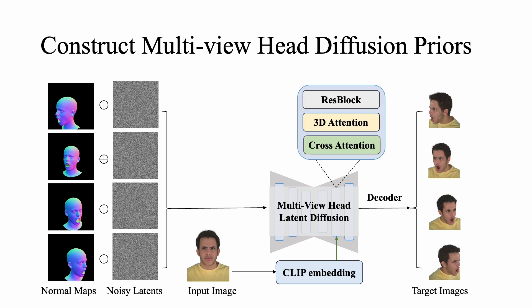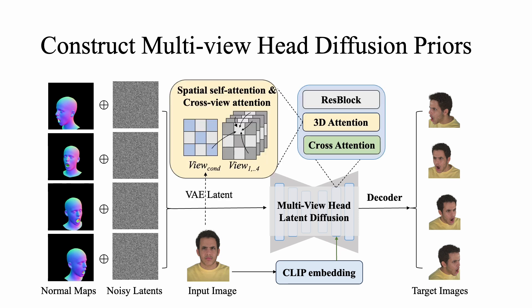The 3D attention blocks enforce 3D consistency by applying cross-attention across all views. They also incorporate the VAE latent of the input image into the denoising process, effectively preserving the identity and appearance details of the input portrait.